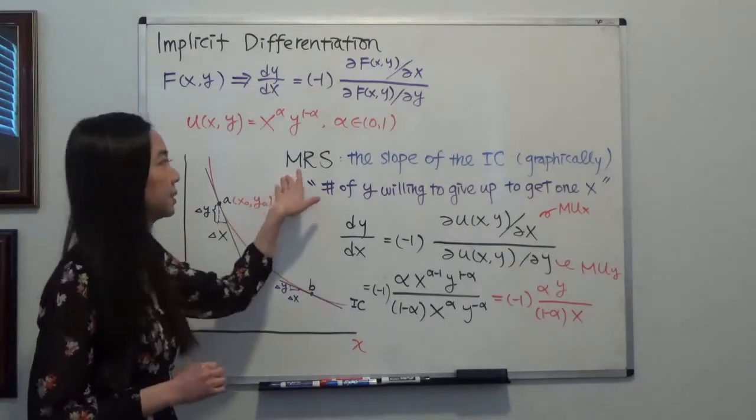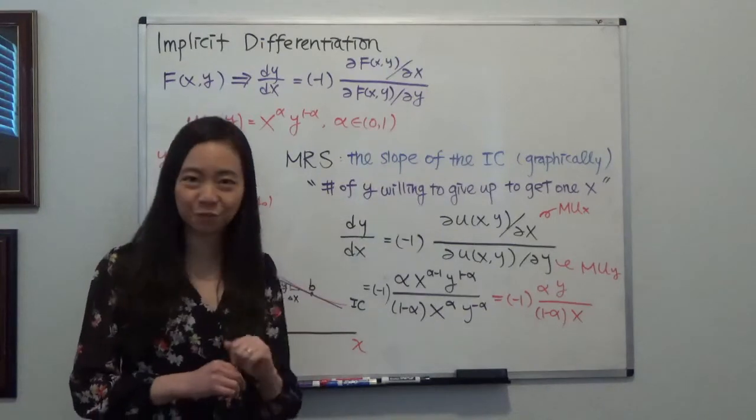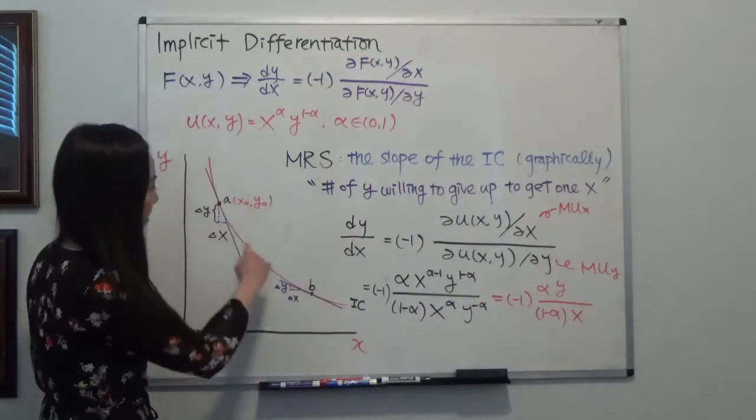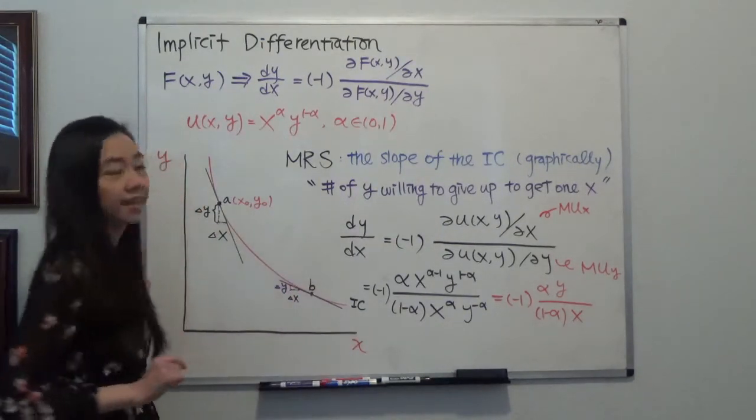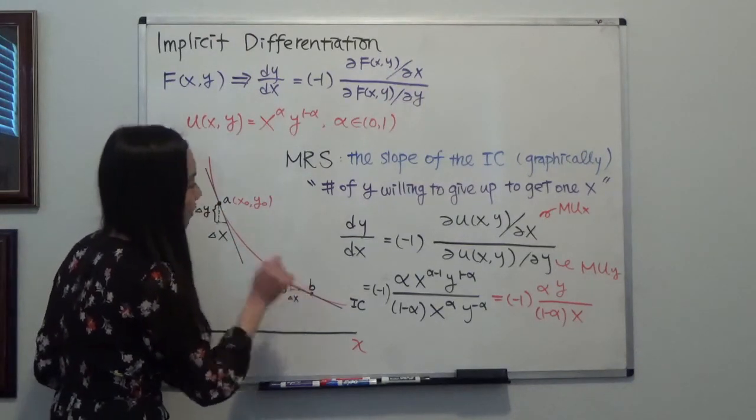So the marginal rate of substitution, graphically, it would be the slope of the indifference curve. So here we have the indifference curve and I can see that at different points, I'm going to have different slopes.